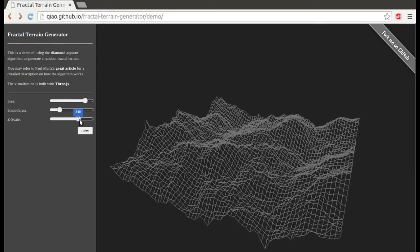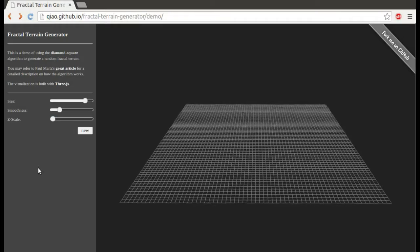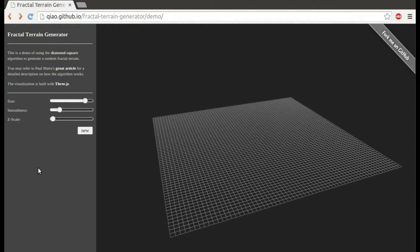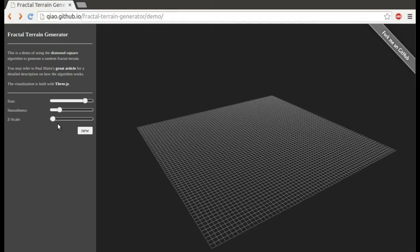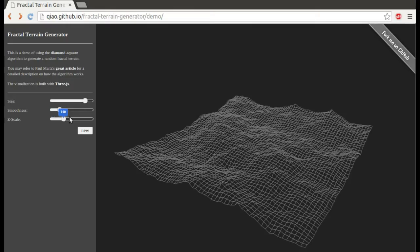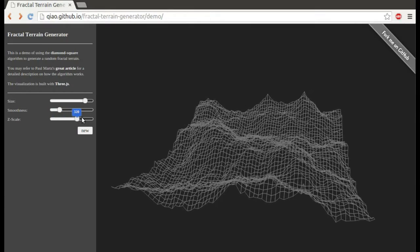So I guess the first thing I'll do, let's change the Z scale. So I think what the Z scale does is set the maximum variation in altitude. So if I change it down to zero, nothing happens. That's pretty boring. And as I increase it, I get taller and taller mountains and deeper and deeper valleys.